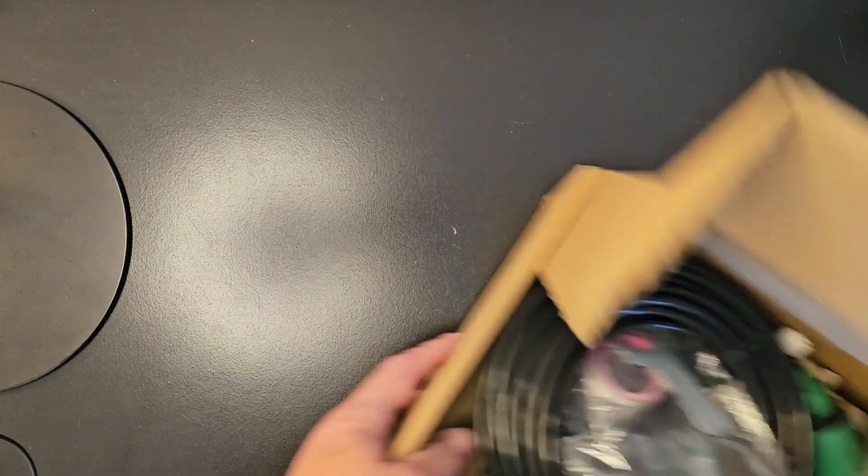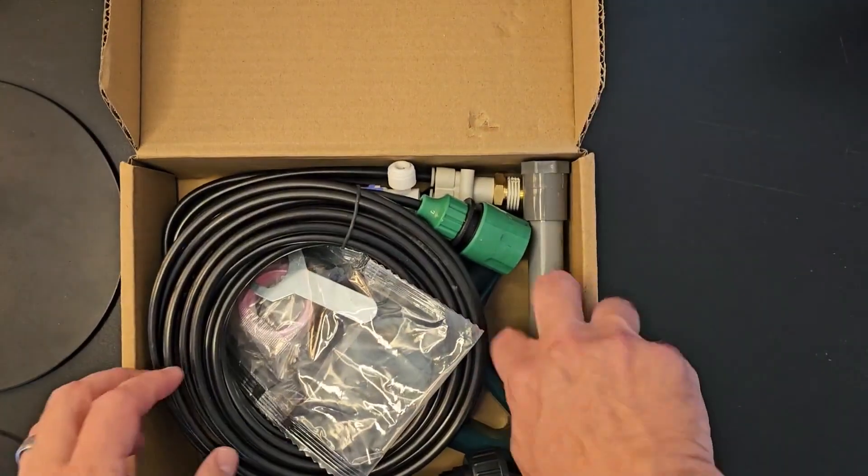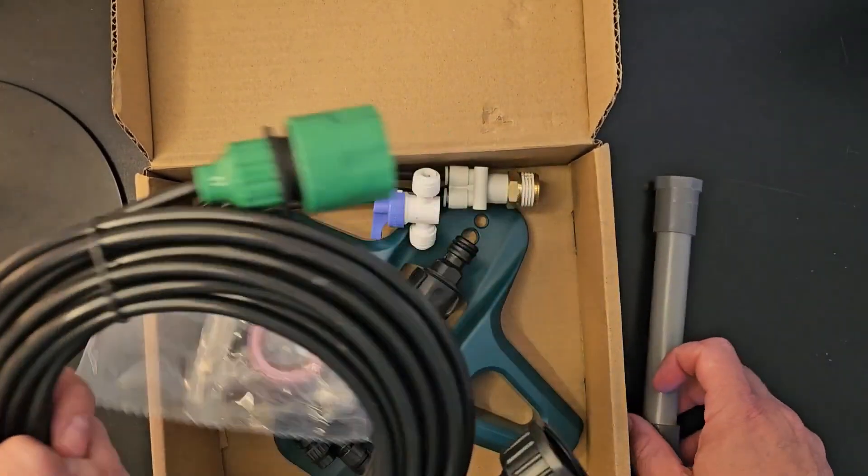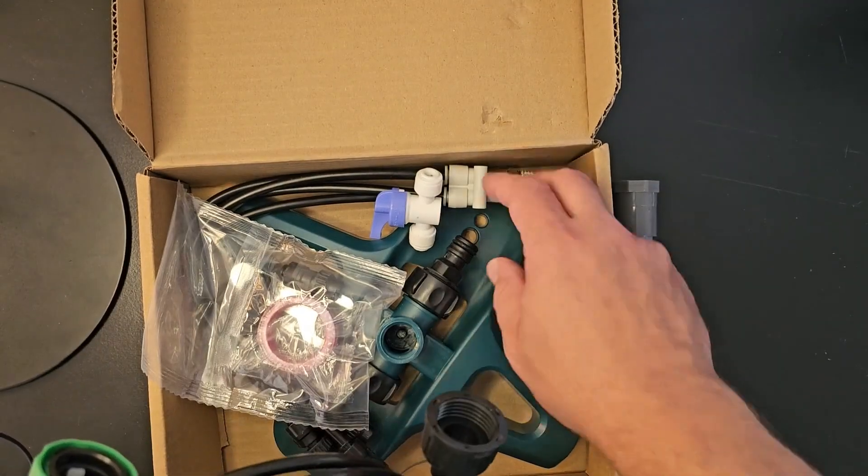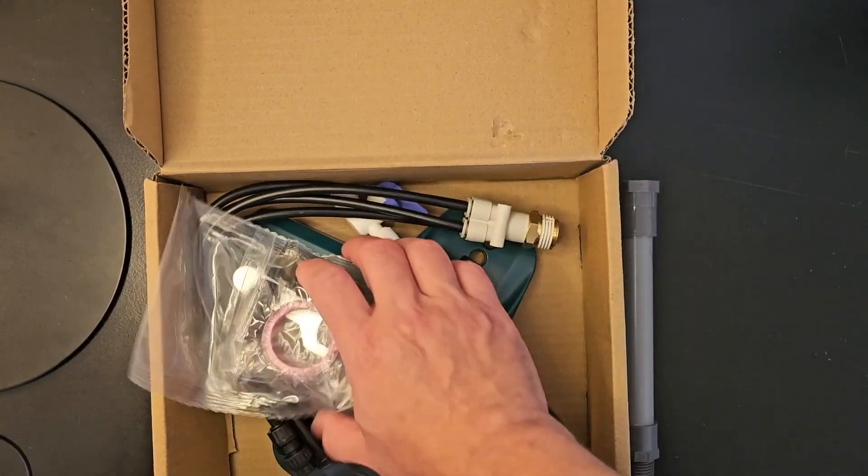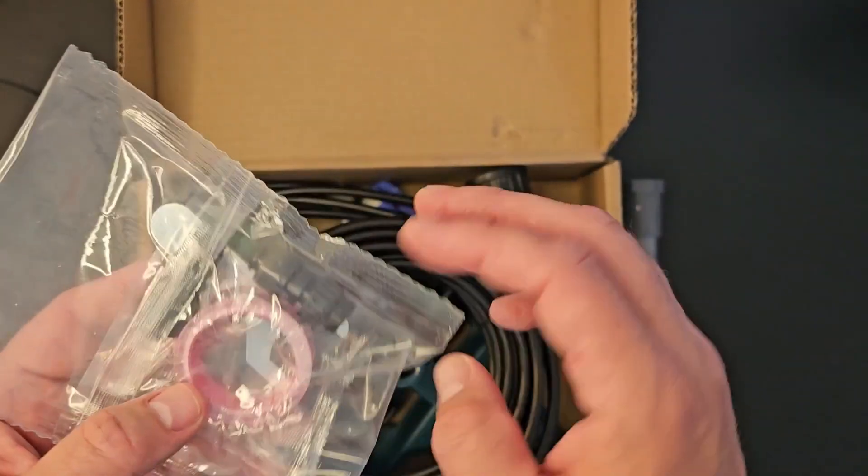Show you all the pieces. Here's your extension tube, this is where your tube connects to your faucet and then into your connections here, and then here's all your other accessories to help put it together.